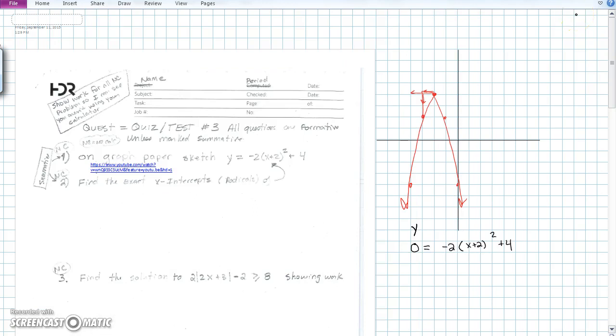In this problem, you're asked to find the exact x-intercepts, which is when y equals 0. I'll replace y with 0 and then solve.